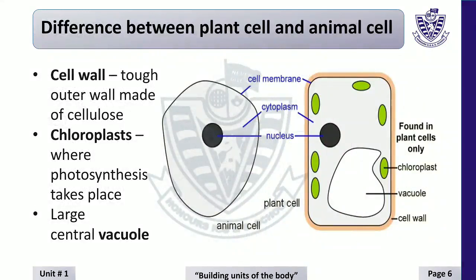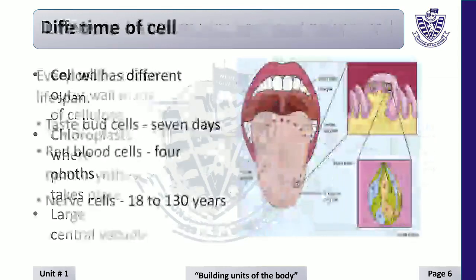Difference between plant cell and animal cell. There are three components which are present in both plant cell and animal cells: cell membrane, cytoplasm, and nucleus. Chloroplasts is only in plant cell and not in animal cells. Vacuole is bigger in plant cell and small in animal cells. The cell wall is only in plant cell and not in animal cells.